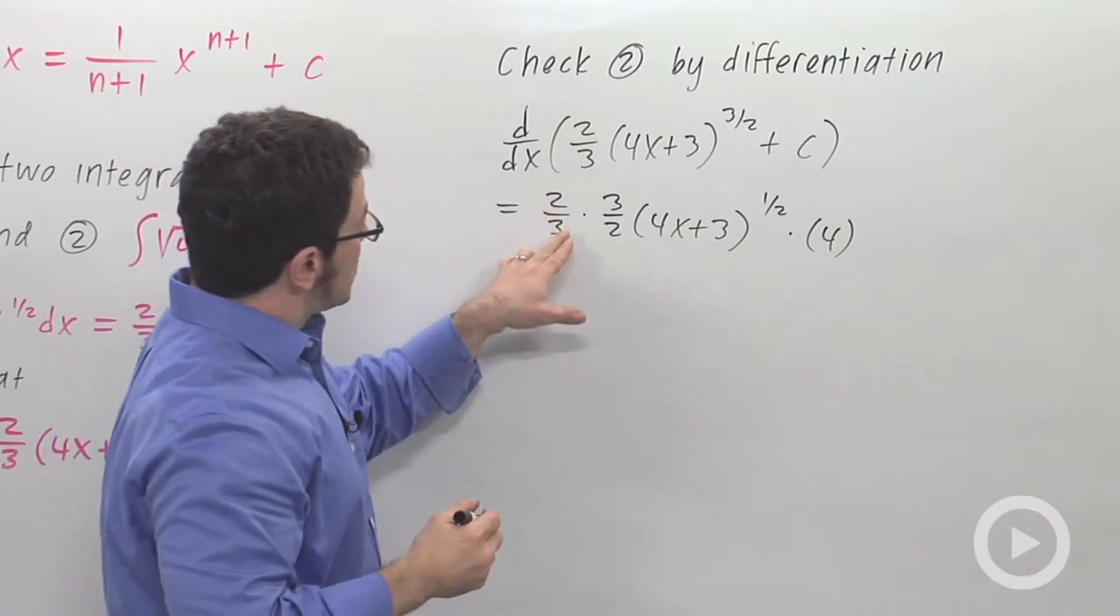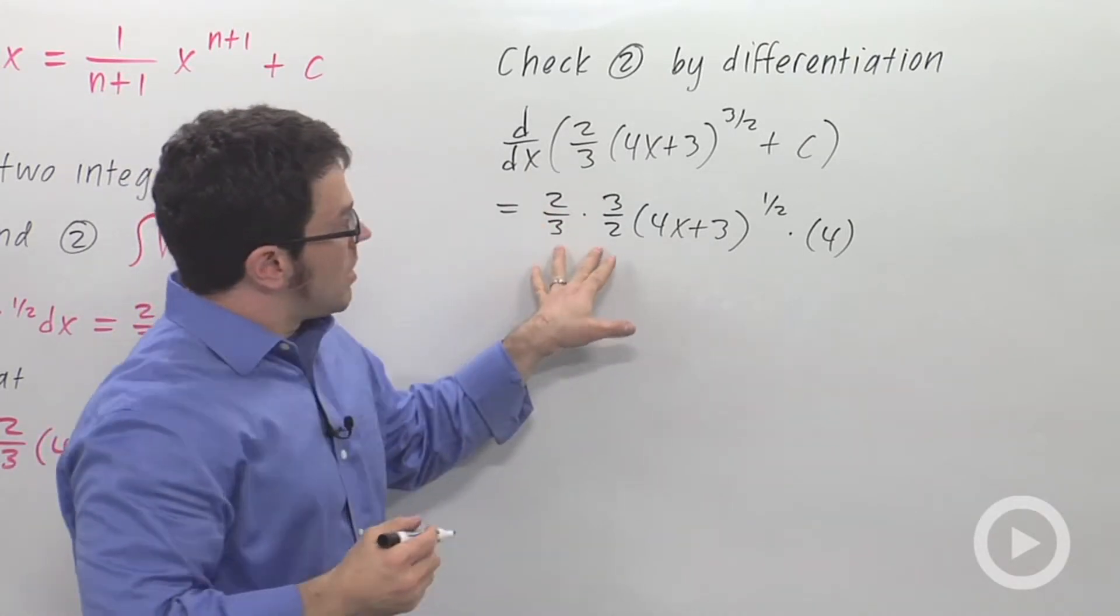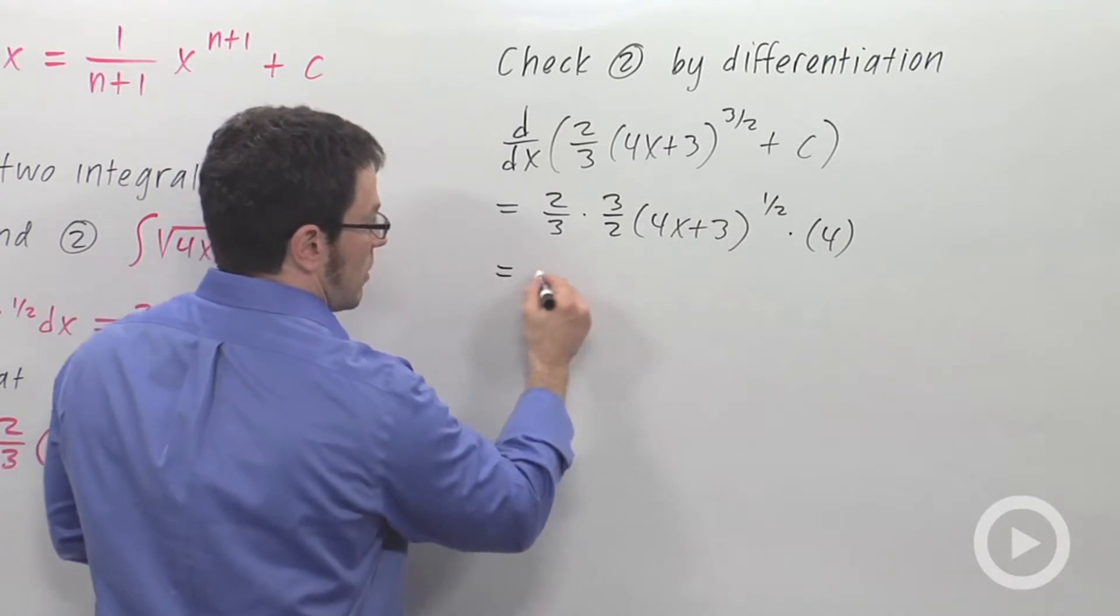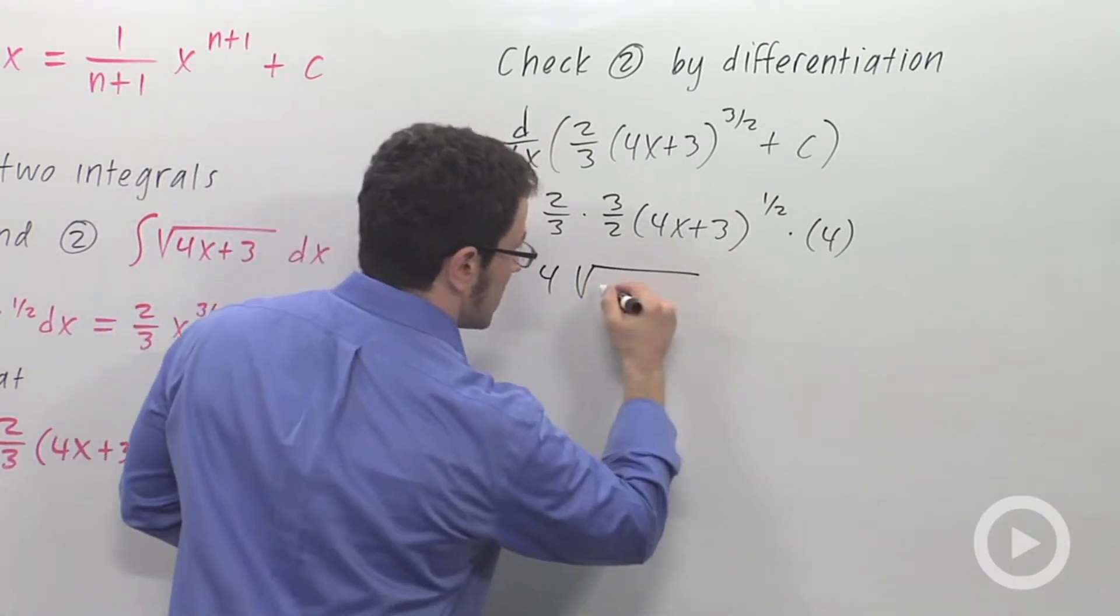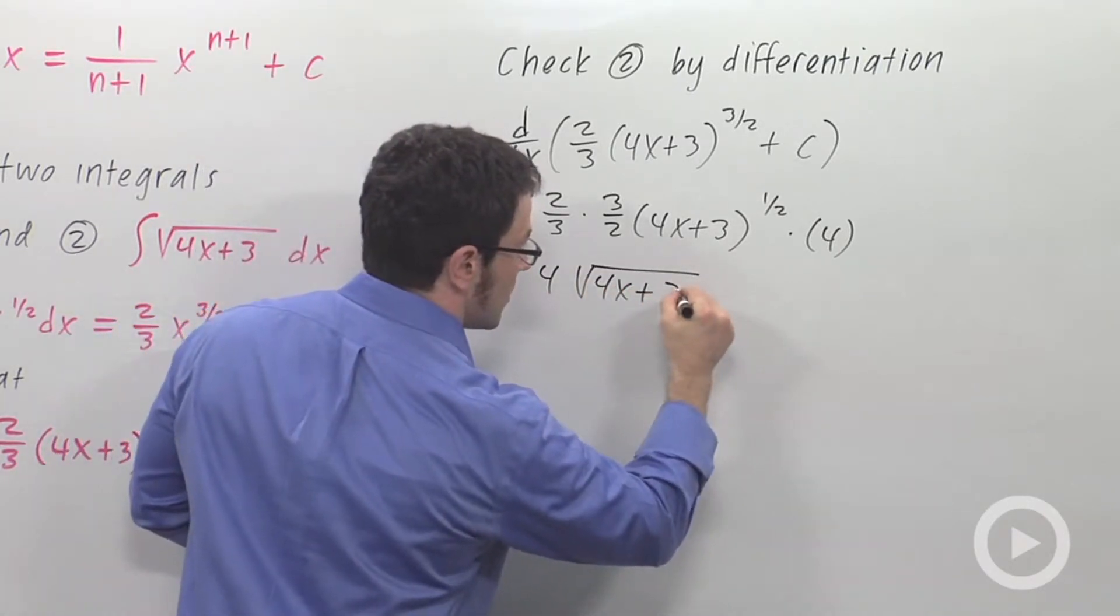When I look at this, I get 2 thirds times 3 halves, which is just 1, but then I have a 4 here, 4 times the square root of 4x plus 3.